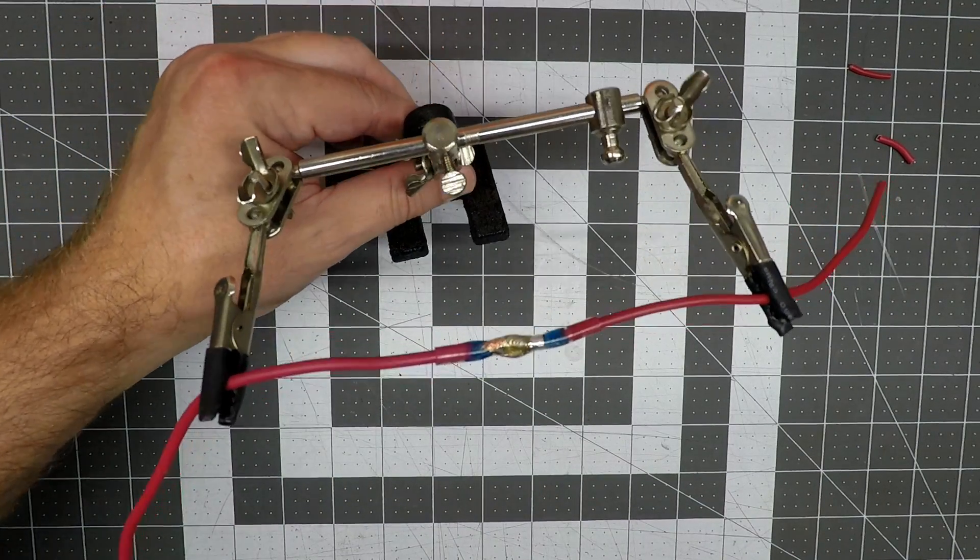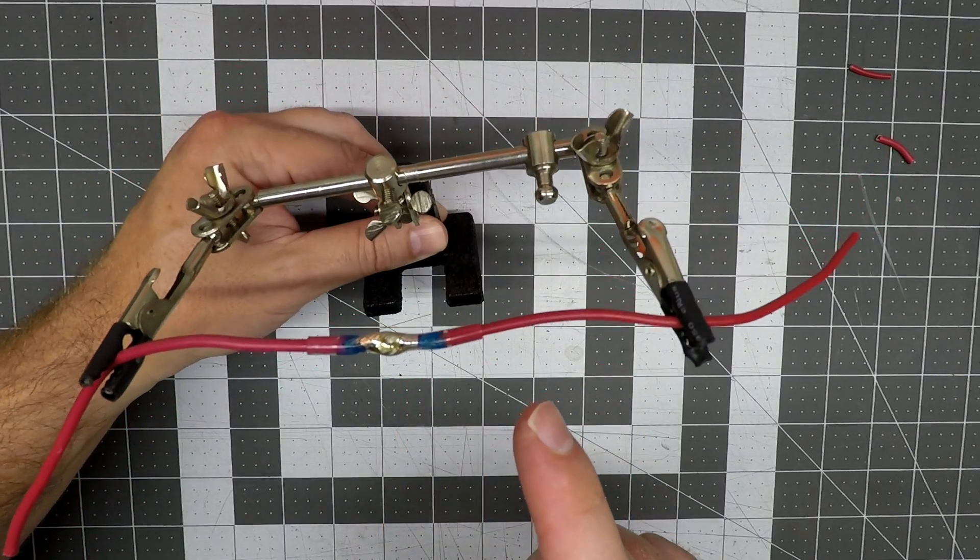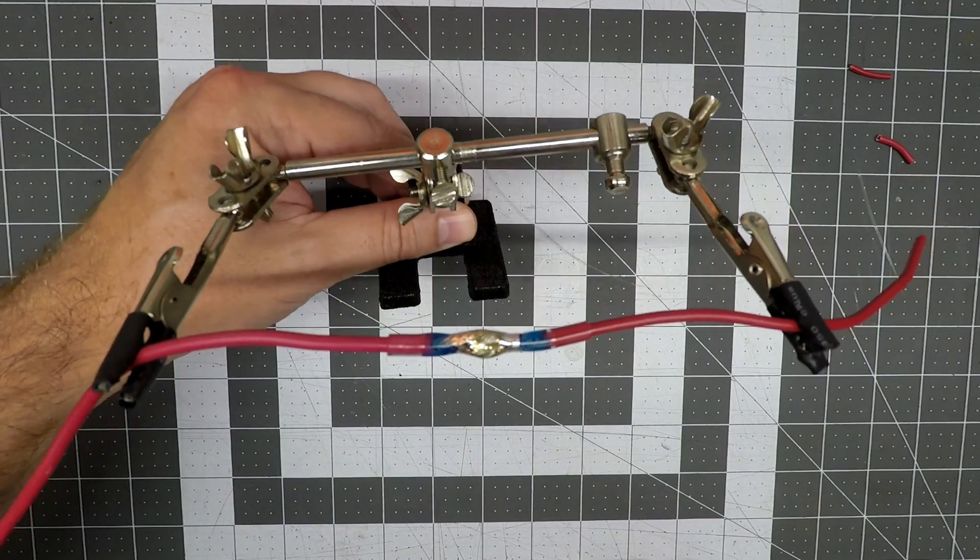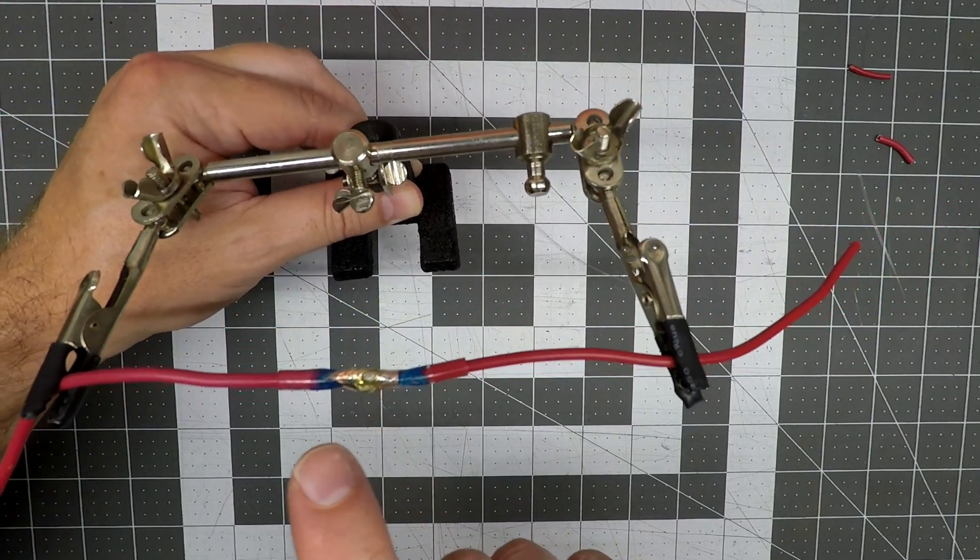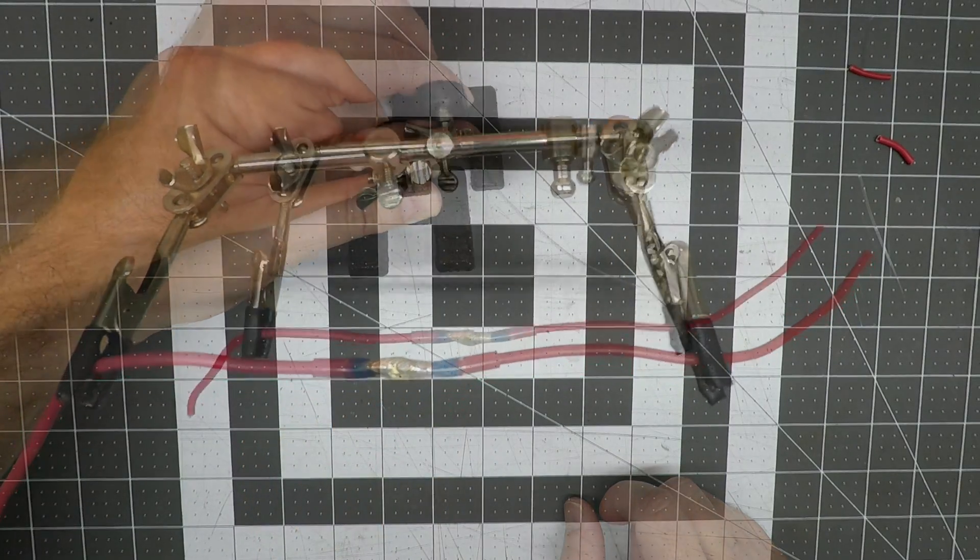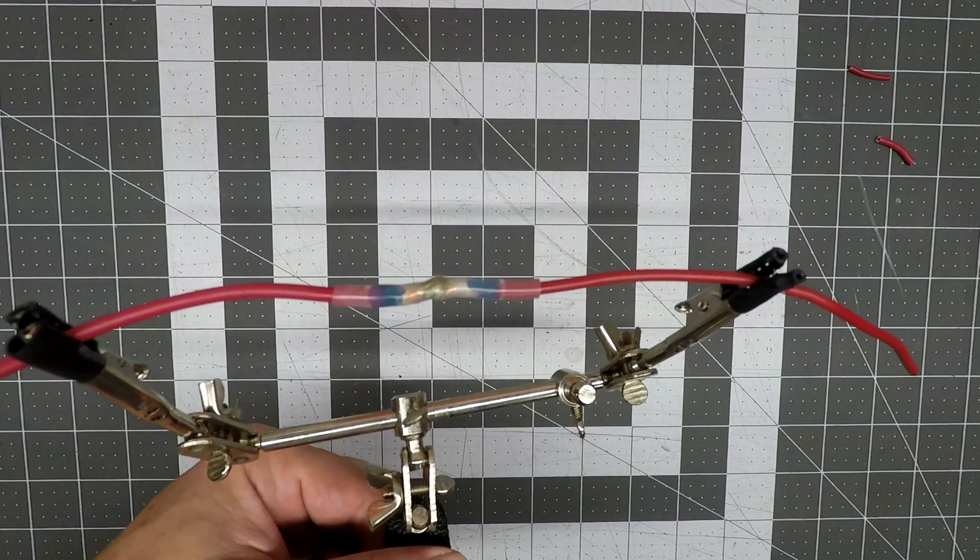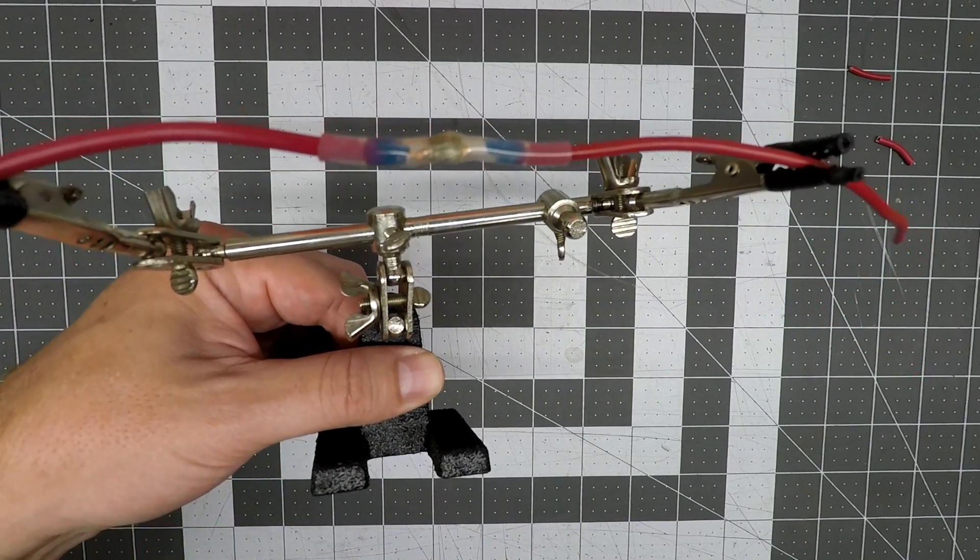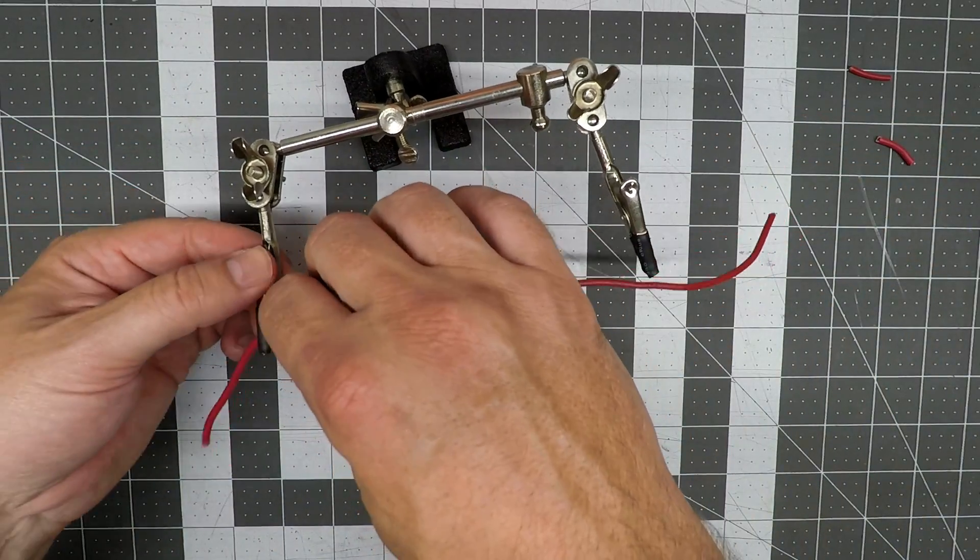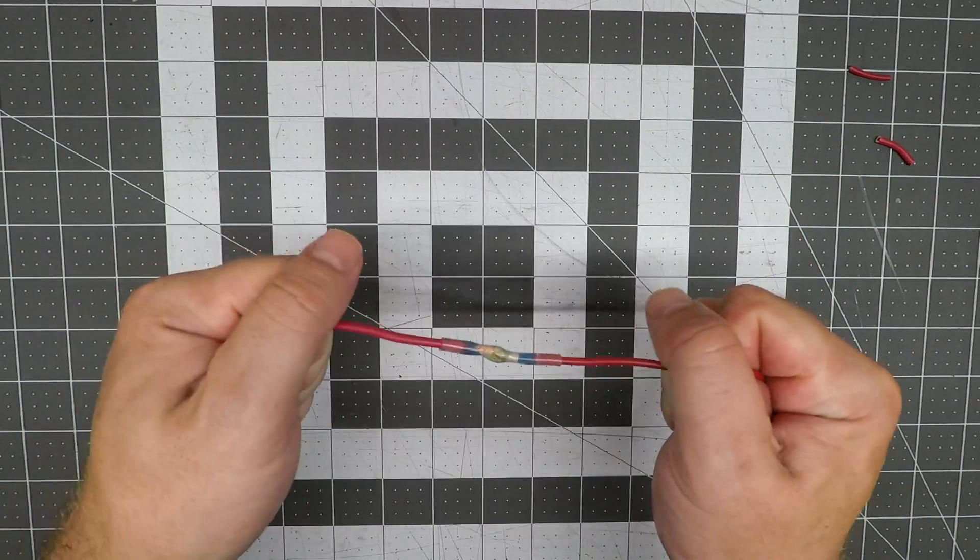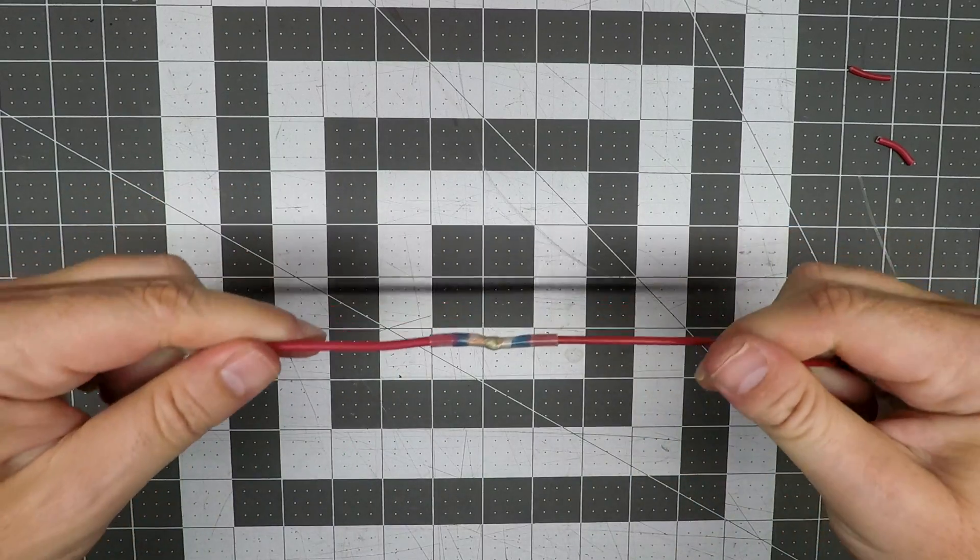So there you have it: solder, adhesive, and heat shrink all in one. As this cools, it starts to not be quite so transparent. And it's pretty tough.